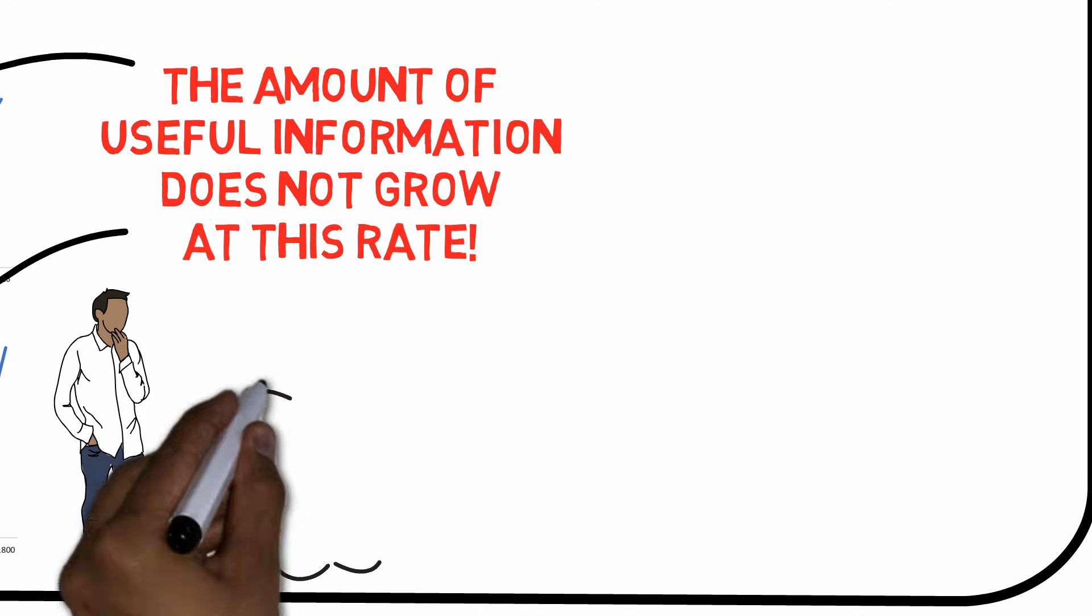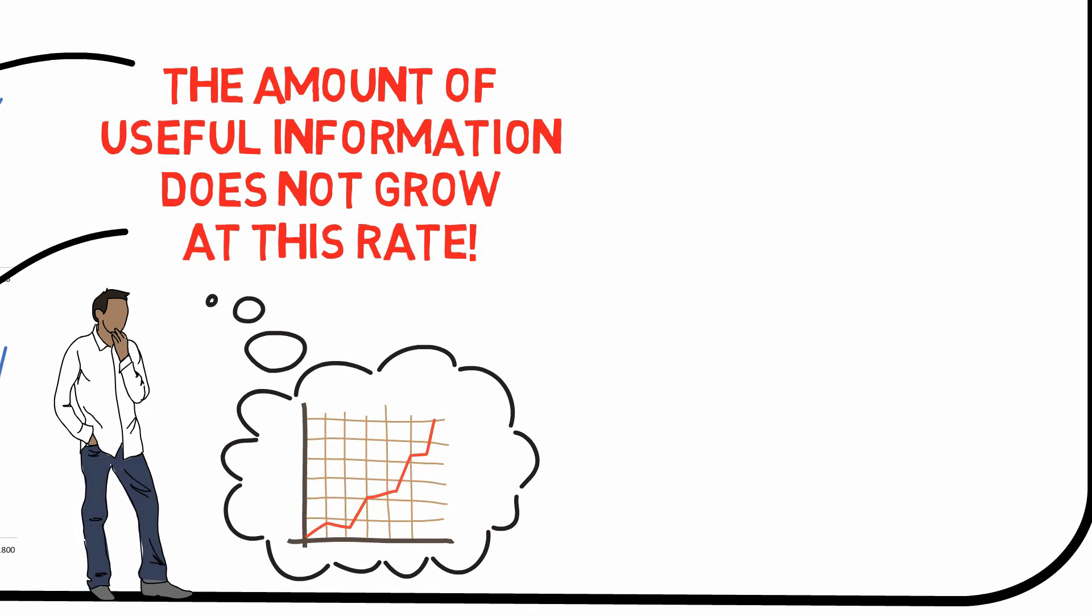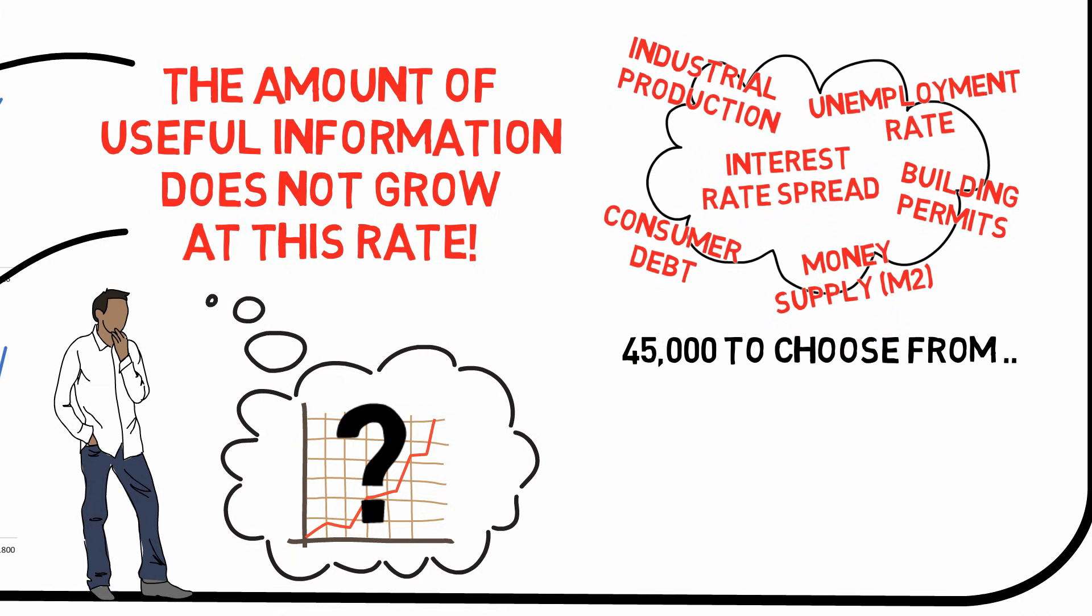Say for instance that you're an investor and you would like to predict how the economy will do during the next five years to tell if you should put your money in the stock market or not. Well, you have more than 45,000 economic indicators to choose from that are produced by the US government only. But which ones are relevant and which ones are not? Which ones are signal and which ones are noise?